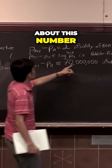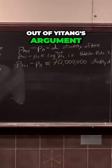So there's nothing too special about this number 70 million. It's what came out of Yitang's argument.